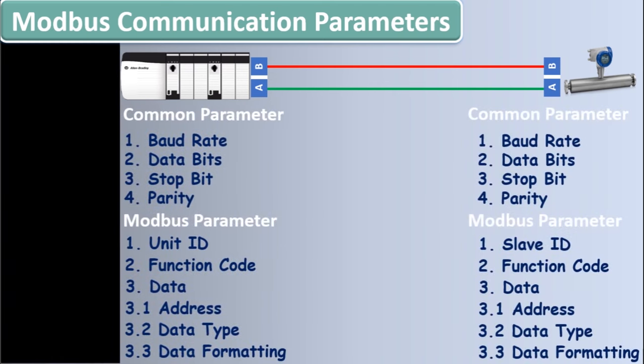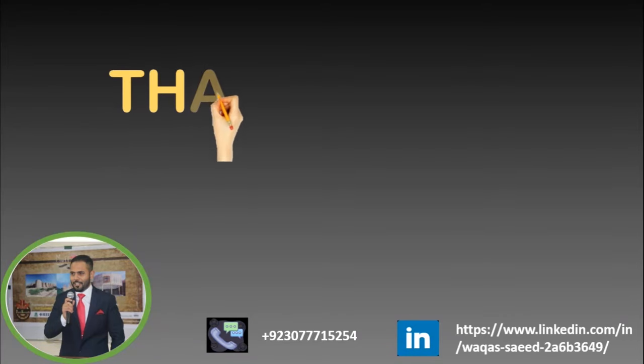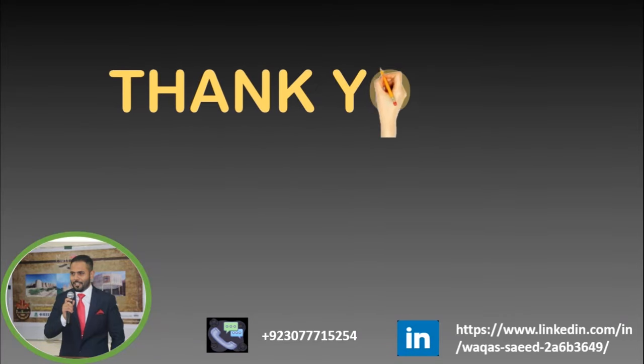Summarizing the presentation: you must know all of the parameters shown on your screen for both devices — they will be very necessary if you want to communicate those devices. If you want to communicate between devices, you can ask the specific vendor for these values. Thank you for watching the video. My name is Vakash. If you have any questions, you can ask me in the comments — your appreciation comments are also a motivation for my next video.